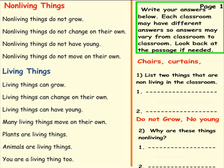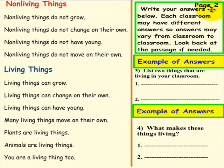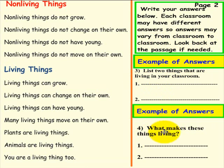Please have another student come up to the smart board, and while they're coming up, please pick up the eraser and erase your answers. Page 2. Please do not pick up a pen until you're asked to do so. Write your answers below. Each classroom may have different answers, so answers may vary from classroom to classroom. Look back at the passage if needed. Question 3: List two things that are living in your classroom. Question 4: What makes these things living? Write your answers here. Please pick up a pen to solve these two questions.